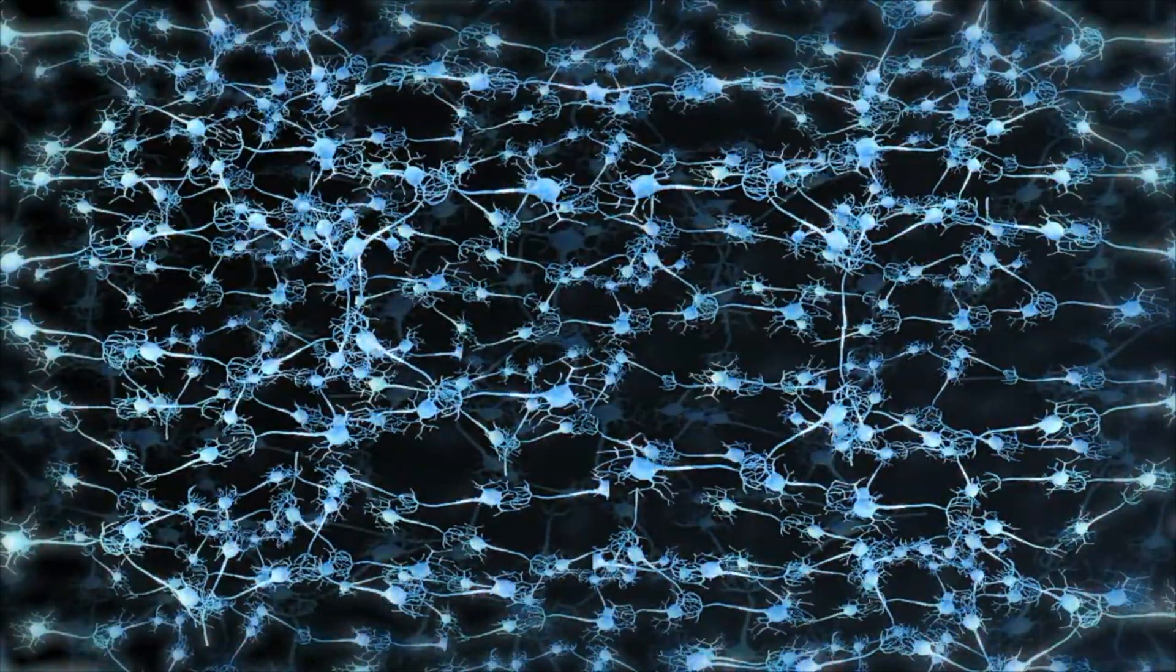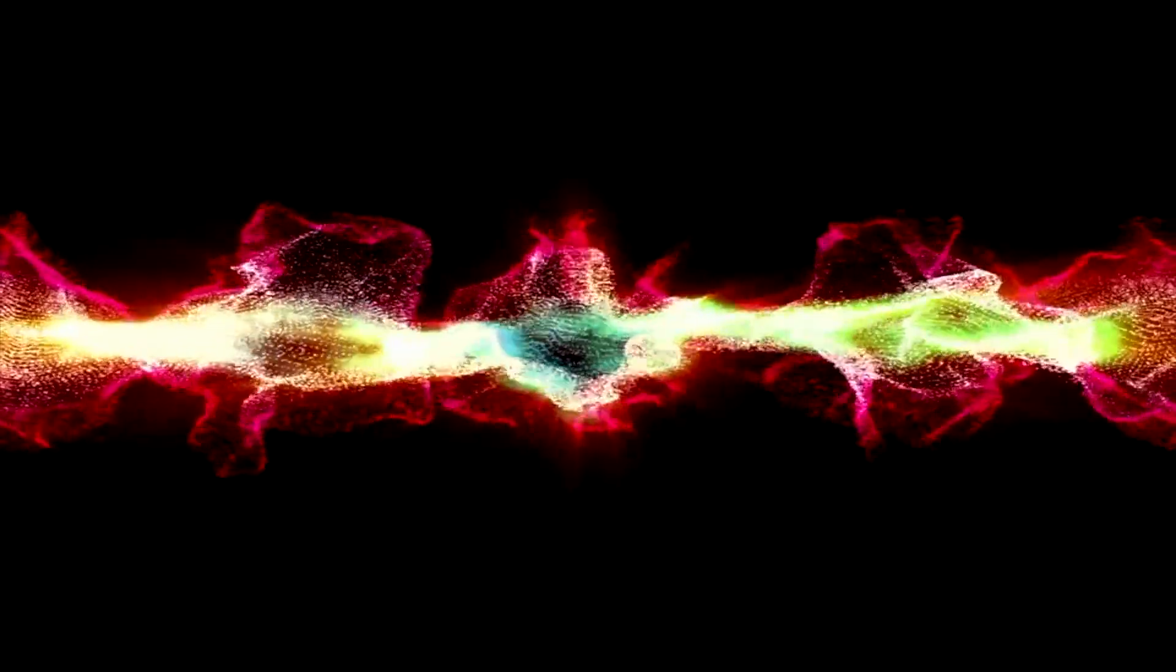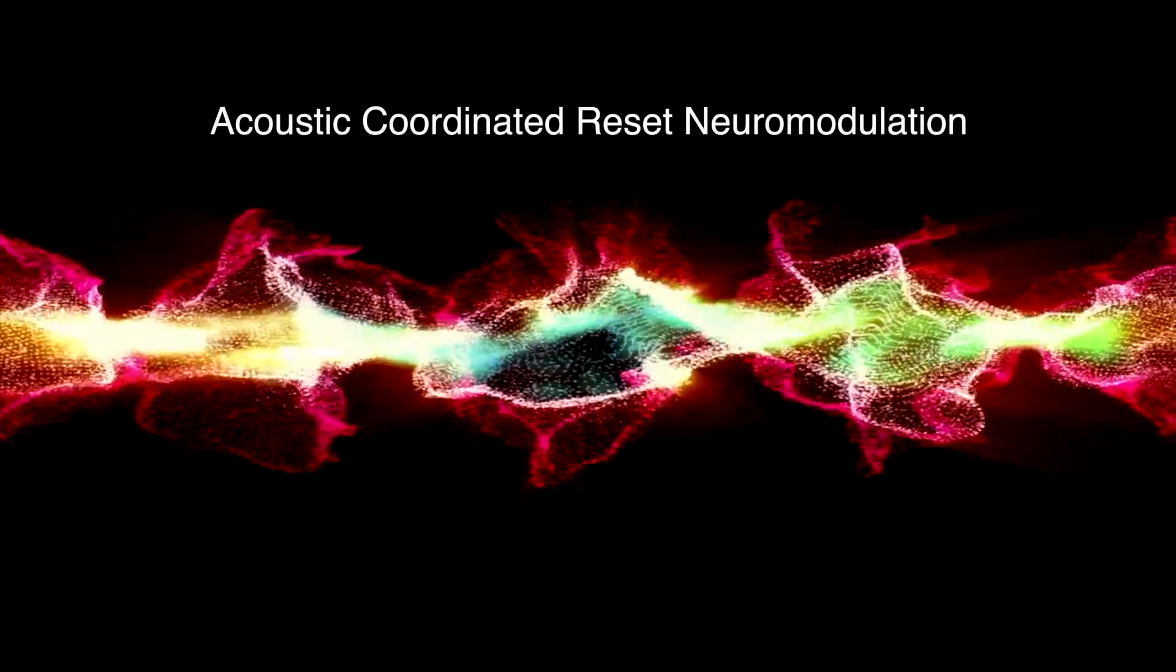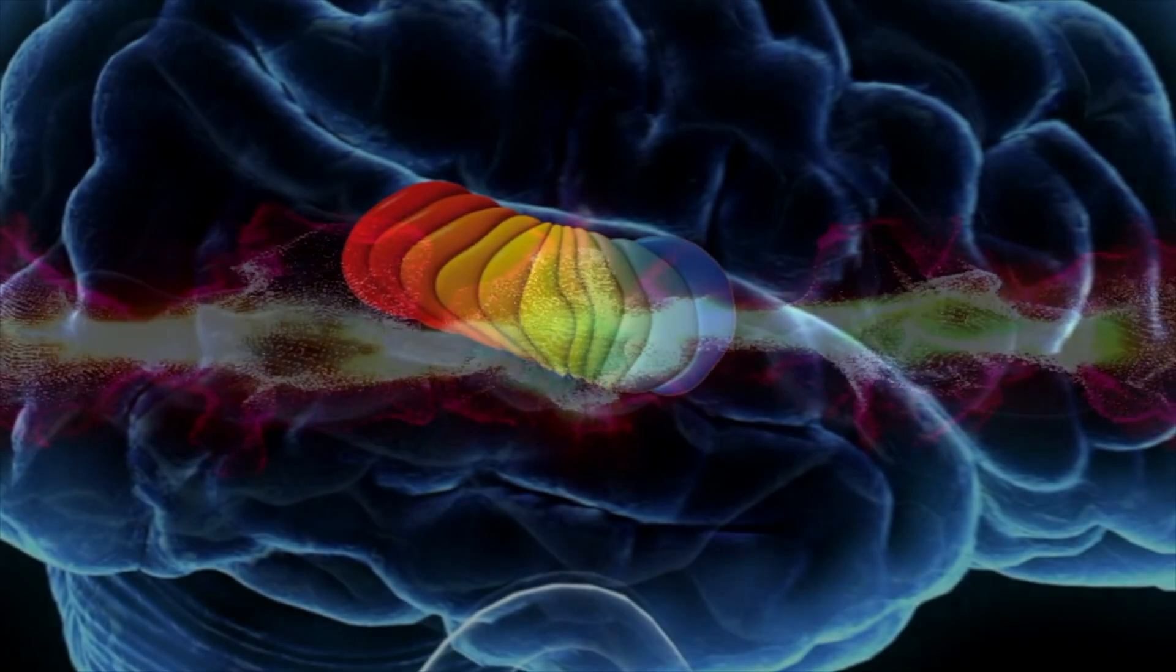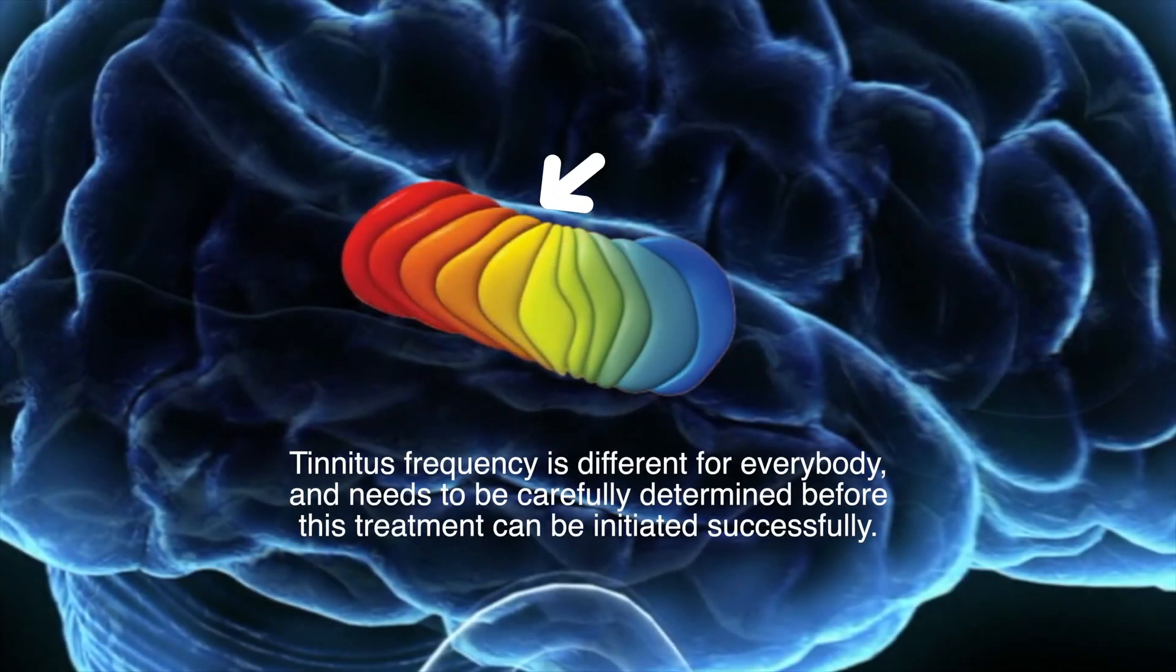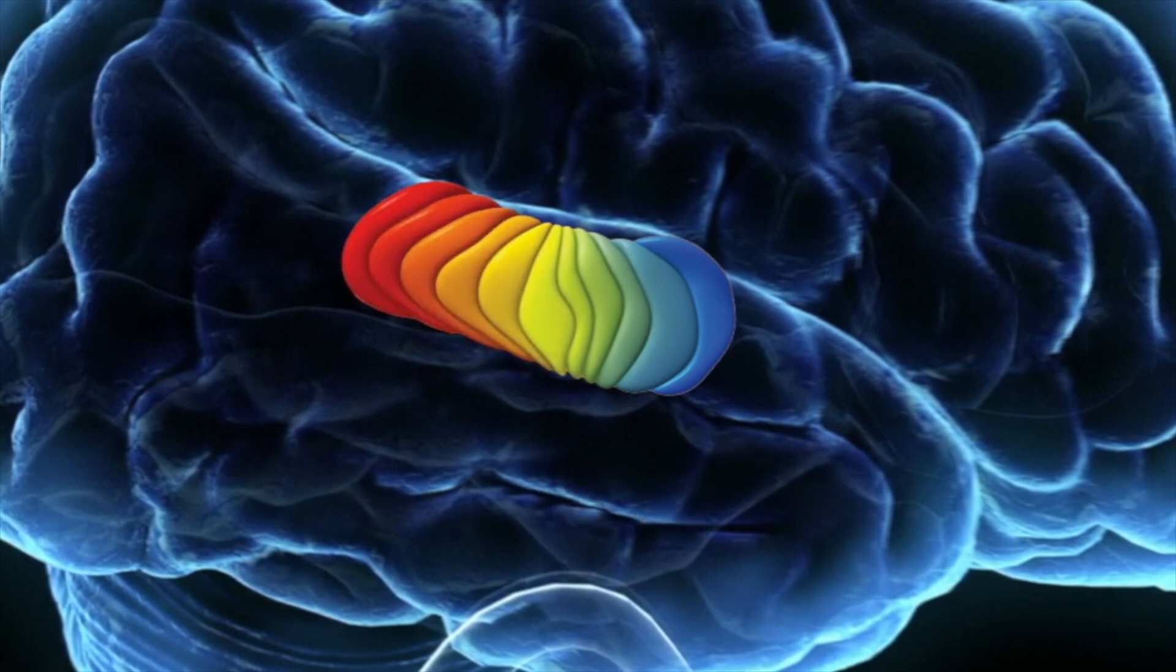One way to disrupt this abnormal neural synchrony is a treatment called acoustic coordinated reset neuromodulation. This acoustic neuromodulation therapy involves using the frequency of the tinnitus as the center tone and then adding some higher and some lower frequency sounds to randomly stimulate the area around the auditory cortex where the tinnitus frequency is found.